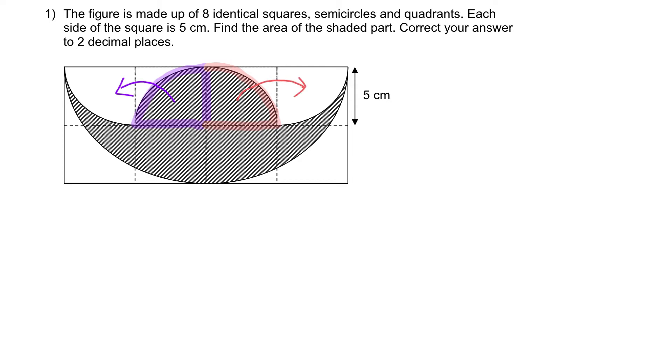Can you imagine the ending shape? You will just get a big semi-circle over here whereby these two squares within it, they are unshaded.